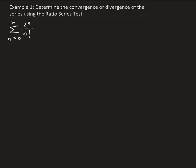In this example, we want to determine the convergence or divergence of the series using the ratio series test. What we're going to do is take the limit of the ratio of the (n+1)th term over the nth term. If we get something less than 1, the series will converge. If it's strictly greater than 1, the series will diverge. Or if we get exactly 1, then the ratio series test is inconclusive.